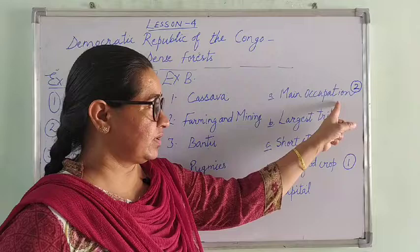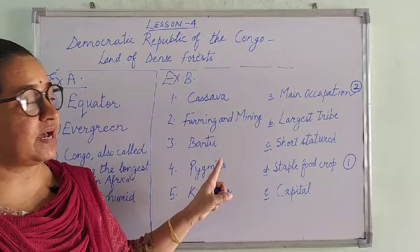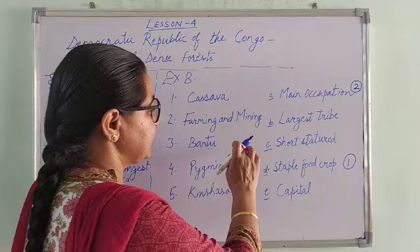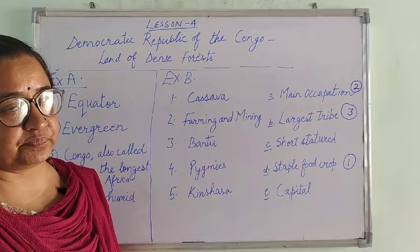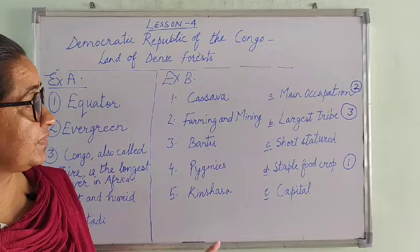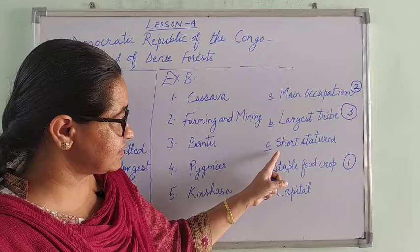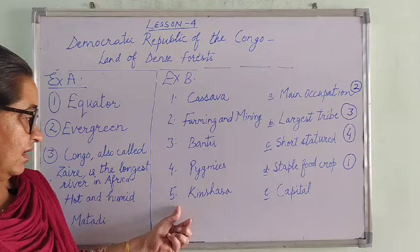Next is Bantu — there are many tribes in this country and the largest tribe is called Bantu. So Bantu matches with Option B — Largest tribe. Next is Pygmies — Pygmies are a primitive tribe and the people of this tribe are of short stature. So Pygmies matches with Option C — Short stature.